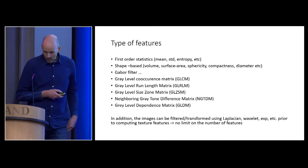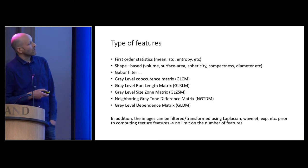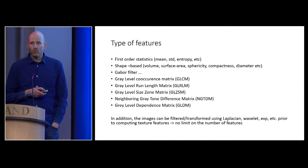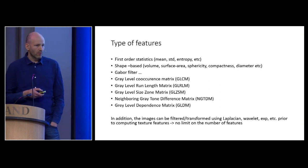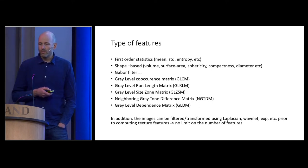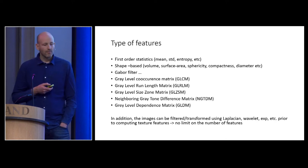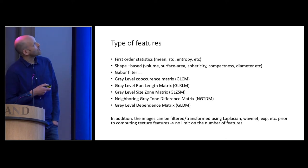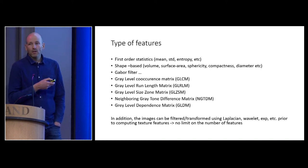We have a large number of features, and there's no strict definition of what constitutes a texture or image feature in radiomics — you can define your own. But there has been a strong increase in focus on standardization of these features for reproducibility. Most people use first-order statistics like mean, entropy, kurtosis, etc., and parameters connected to volume, surface area, compactness, diameter, and how well the tumor fits a sphere.